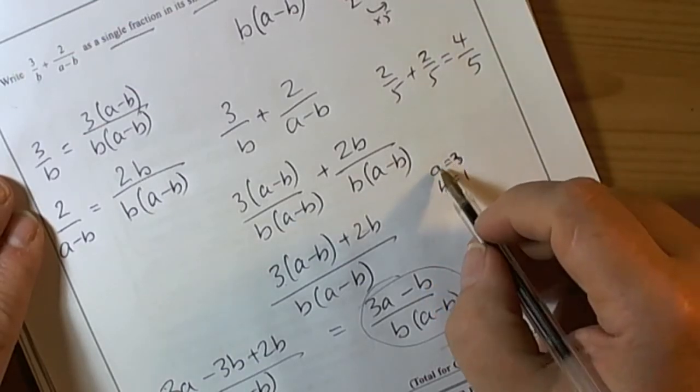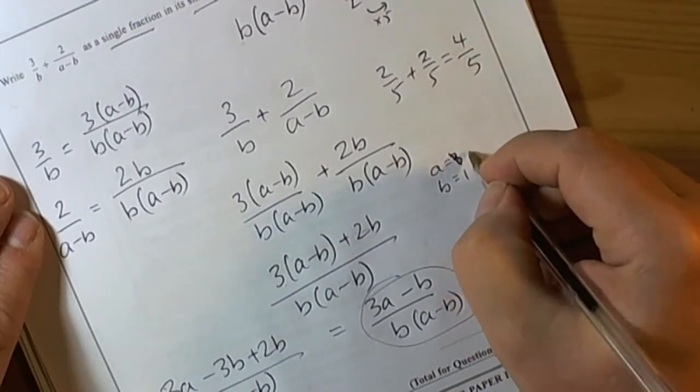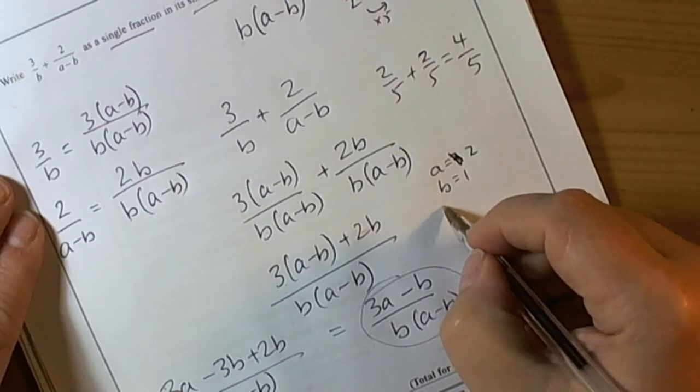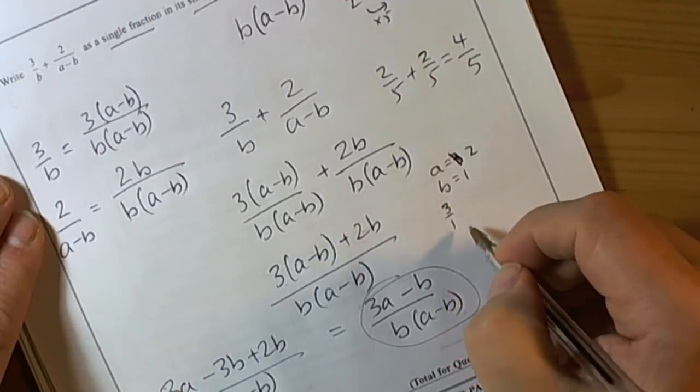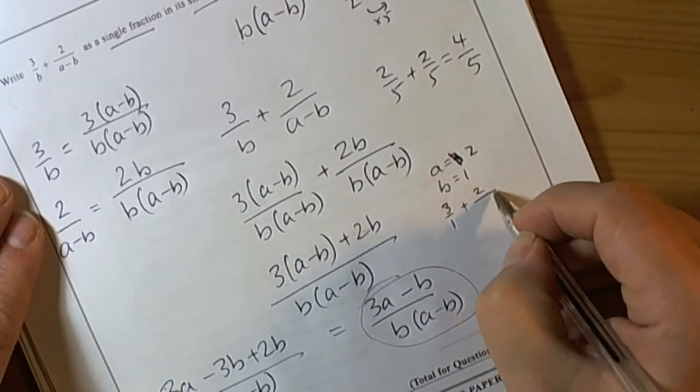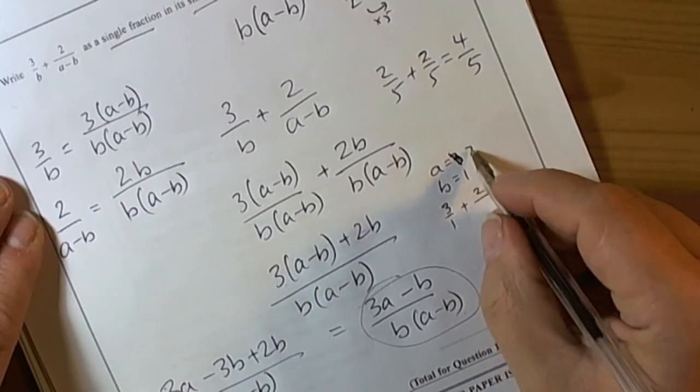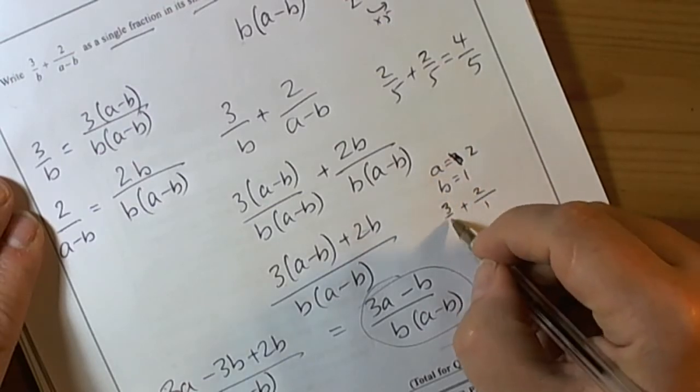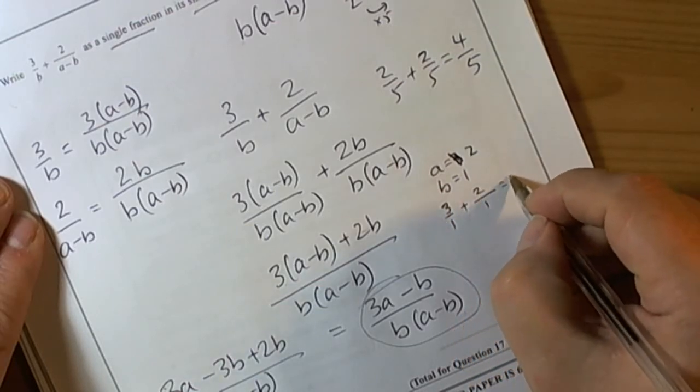Let's have a look at what we've got then. The original fraction said we'd be doing 3 over the b value plus 2 over (a-b). So 2 take away 1, which is 1. So 3 over 1 plus 2 over 1 is 5.